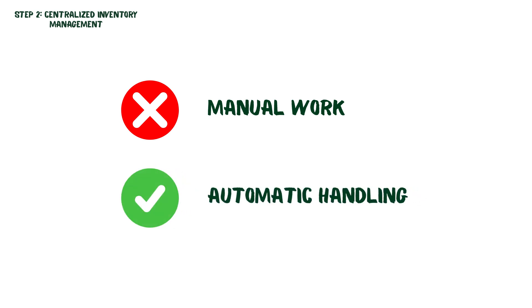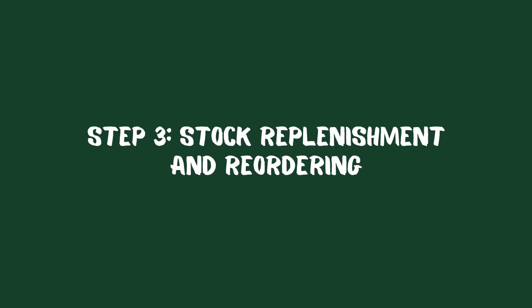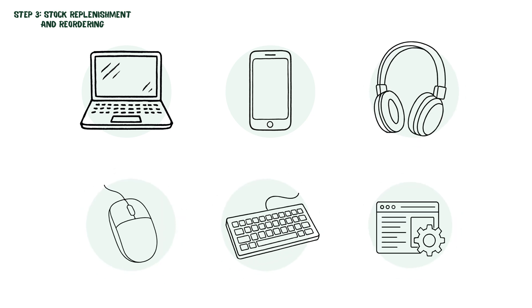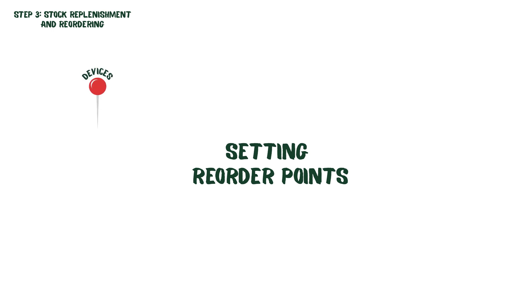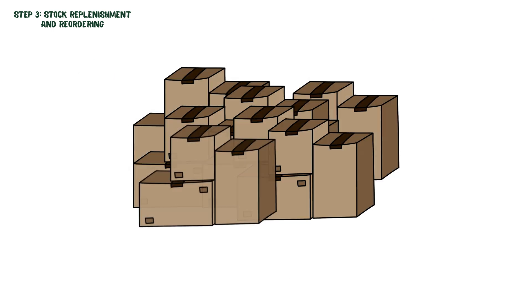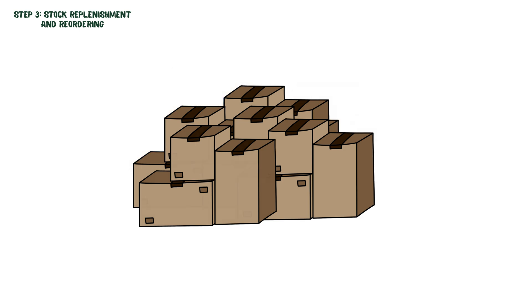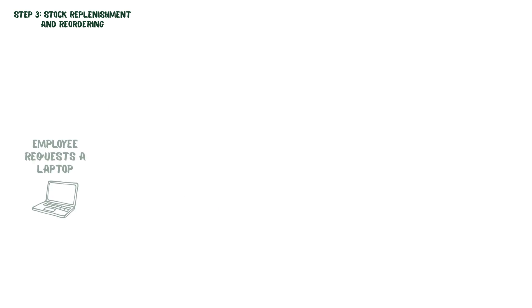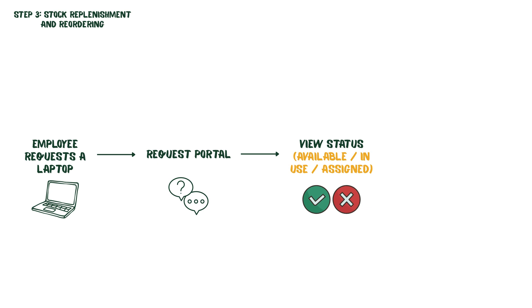Step 3: Stock Replenishment and Reordering. The next step is making sure you never run out of critical IT assets. Part of this is setting reorder points to know when it's time to restock devices, software, or licenses. For example, if your stock of laptops drops below 100 units, you can set an automatic reorder to purchase another 200 laptops, ensuring you have enough stock for new hires and that projects don't get delayed. Another important part is visibility — when an employee requests a laptop, the request portal displays how many laptops are available in storage, how many are in use, and how many are assigned to other projects.